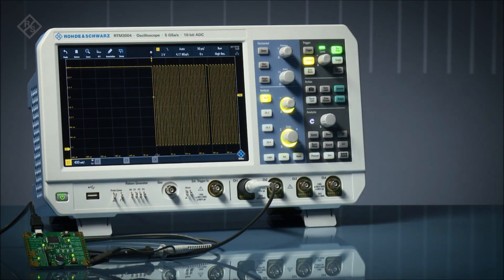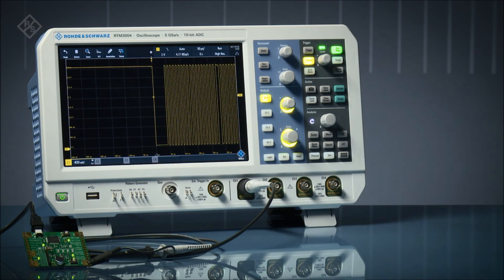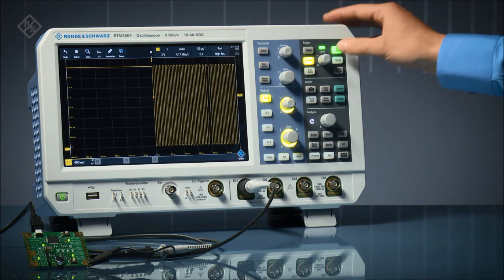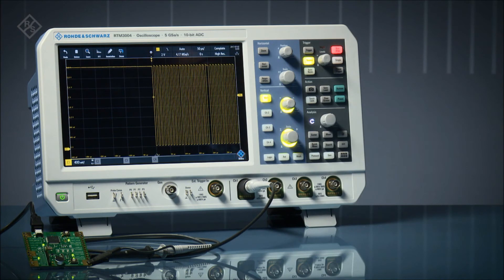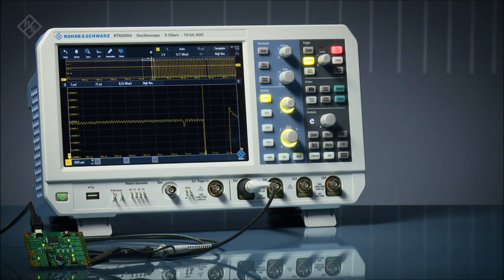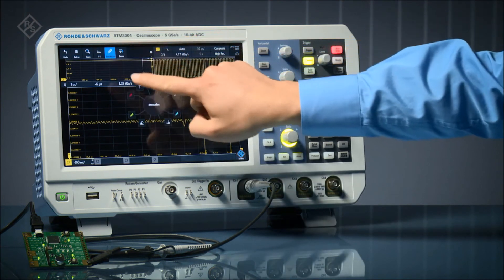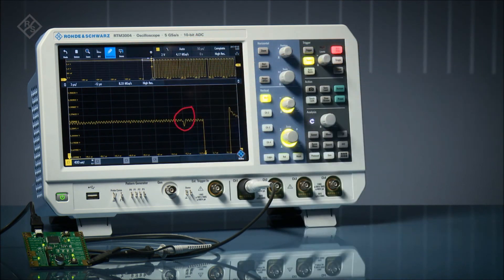Rohde & Schwarz RTM 3000 series oscilloscopes feature vertical zoom. Simply draw a box around the portion of the signal you want to magnify. Combined with the instrument's 10-bit ADC, vertical zoom allows you to find small signals in the presence of large amplitudes.